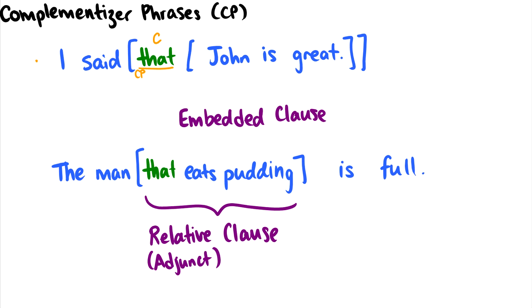This introduces another clause, so the embedded clause John is great. And we can think of this as just another tense phrase or another sentence within our sentence. So I said that John is great.